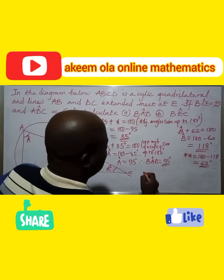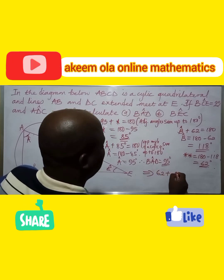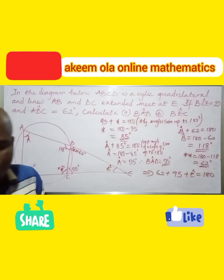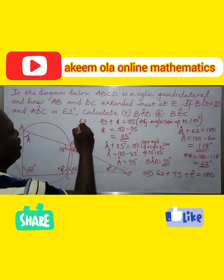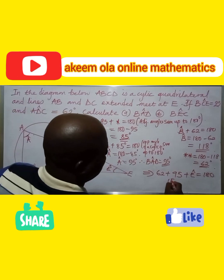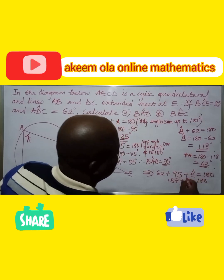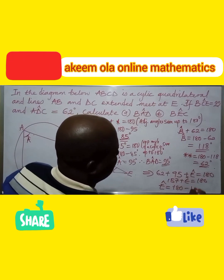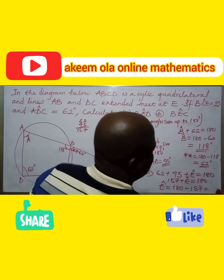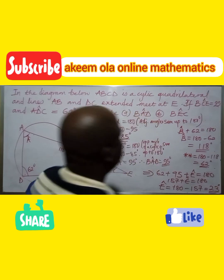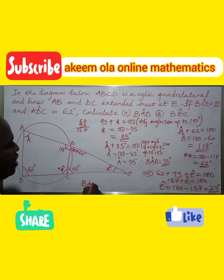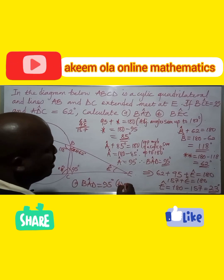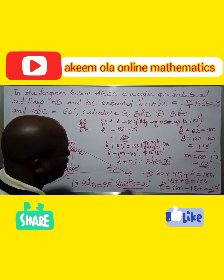In triangle BEC: angle BCE is 62°, angle CBE is 95° (from BAD), and we add these: 62° plus 95° equals 157°. So 157° plus angle BEC equals 180°. That means angle BEC equals 180° minus 157°, which gives us 23°.